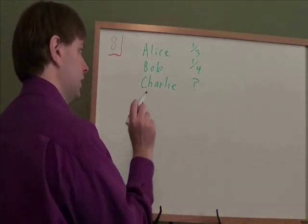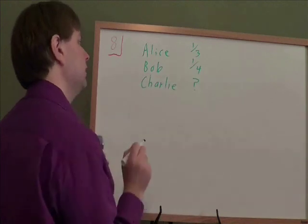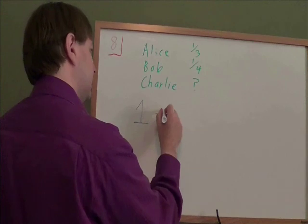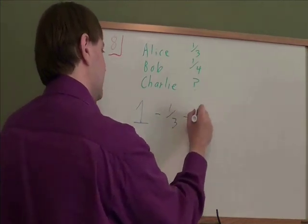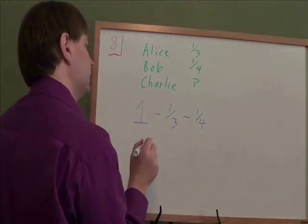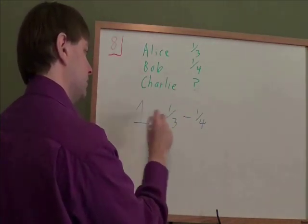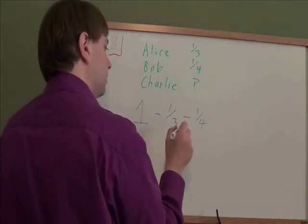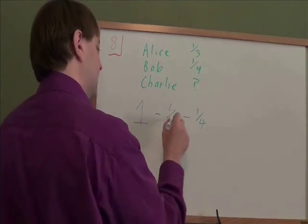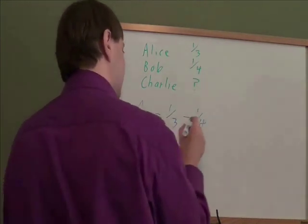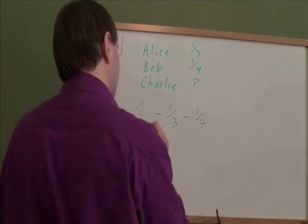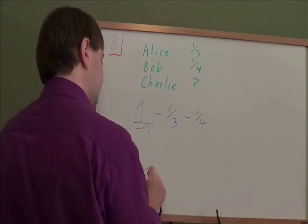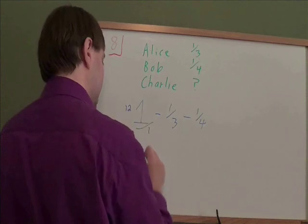If Alice does 1 third of a project and Bob does 1 fourth, how much does Charlie need to do? Well, we start with one entire project. And we need to subtract how much Alice has done and how much Bob has done. And that will leave how much Charlie needs to do. So the first step in adding and subtracting fractions is to get a common denominator. For over 3 and over 4, that common denominator will be 12. 12 divides by 3 and 12 divides by 4. So 1 or 1 over 1, if I need to make that something over 12, I'll multiply by 12. 12 times 1 is 12. And 12 times 1 is 12.